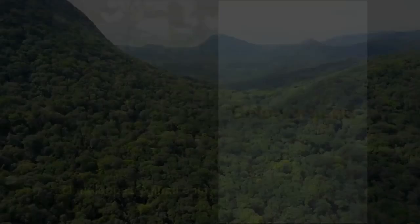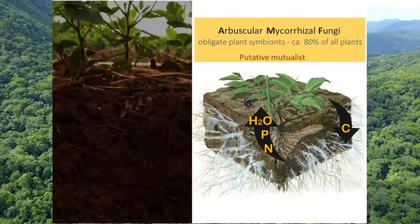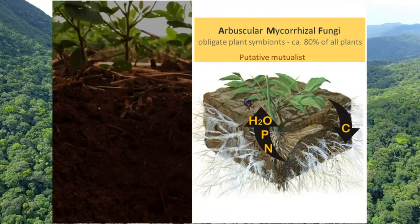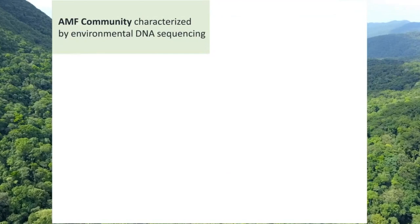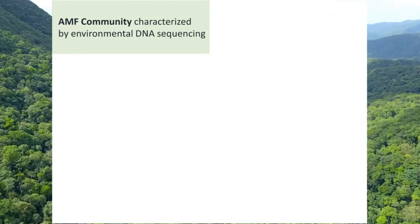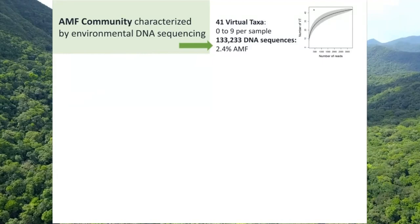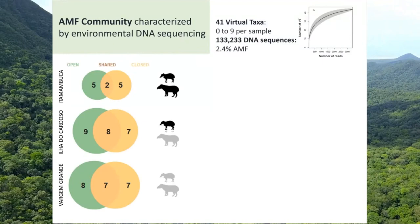Hi, Claudia again, to talk about below-ground communities and show you evidence that they may also change due to loss of large herbivores. The Arbuscular Mycorrhizal Fungi, AMF, are obligate symbionts of the majority of land plants. They are involved in a trade of nutrients, water, and defense against root disease for carbon compounds from the plant. To investigate changes in the AMF communities in our defaunation experiment, we collected soil from the plots and submitted them to DNA sequencing using specific primers to detect AMF. This resulted in 41 virtual taxa — the equivalent of species — which is quite high diversity for this group.